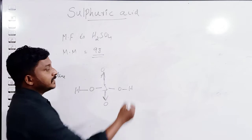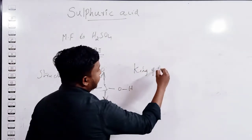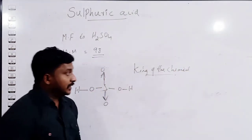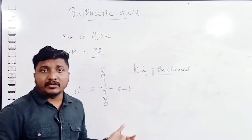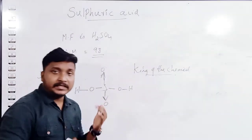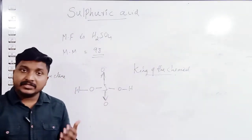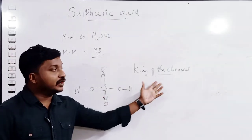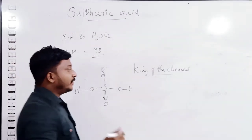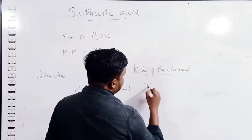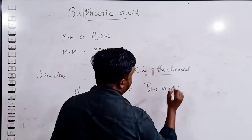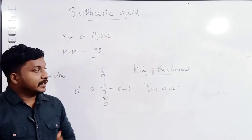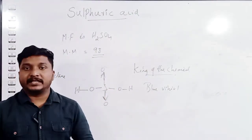We call sulfuric acid the king of the chemicals because we can prepare a large number of chemicals by using sulfuric acid. This is the reason we call H₂SO₄ the king of the chemicals. Another name of H₂SO₄ is oil of vitriol.